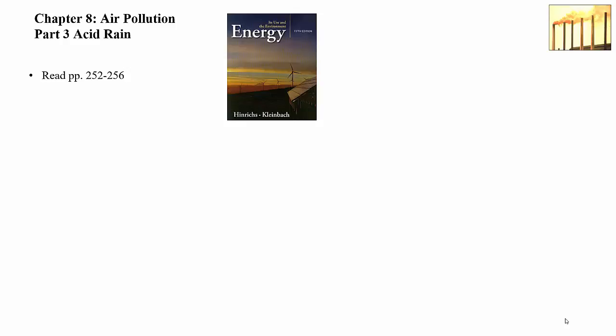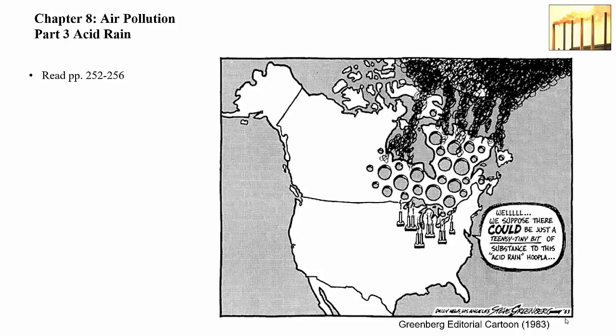As I will discuss, acid rain has had a big impact on many lakes in Ontario, Quebec, and eastern Canada. The section on acid rain is on pages 252 to 256 in the course textbook. This presentation is a little more detailed than what's covered in the textbook. This is a Steve Greenberg editorial cartoon from 1983, from before much real action was taken on the problem of acid rain.